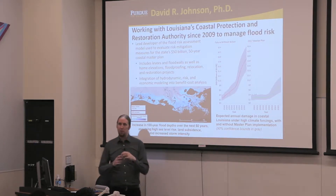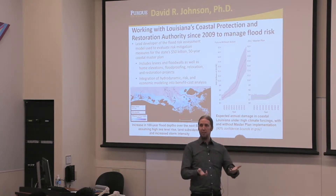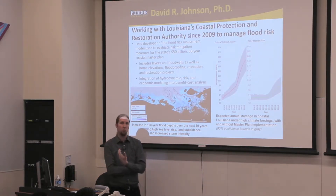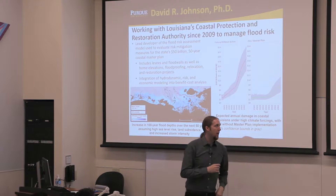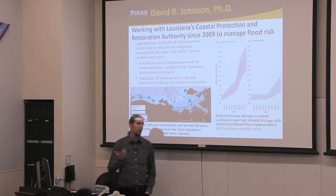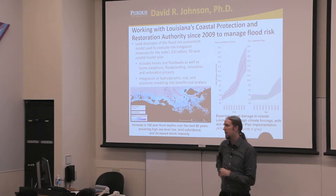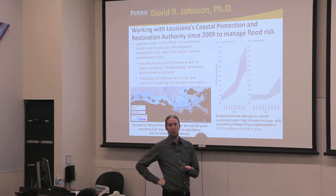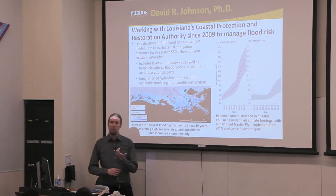This is a big integrated simulation model where we're not only modeling what the future landscape might be with different projects like river diversions or marsh creation projects to restore wetlands, but also thinking about how a future landscape impacts flood risk when climate change is ongoing, when population is shifting from rural areas to urban centers, and when there's uncertainty about things like the chance that levees could fail again as they did during Hurricane Katrina.